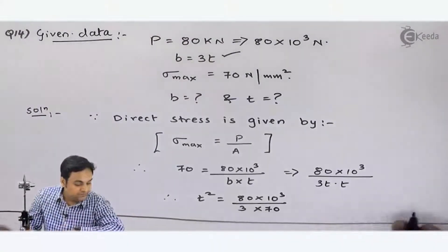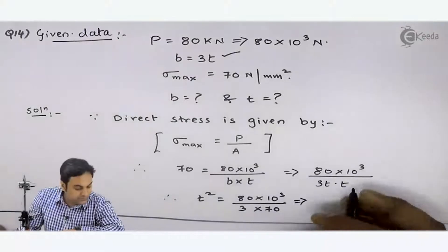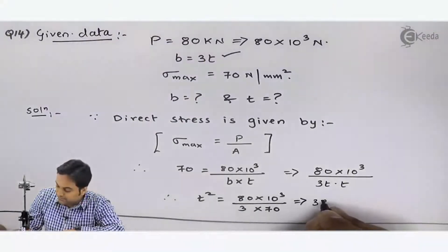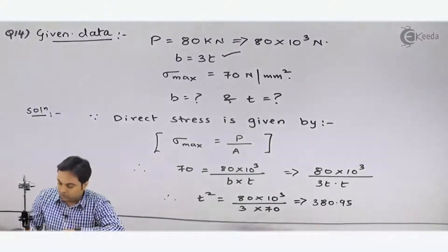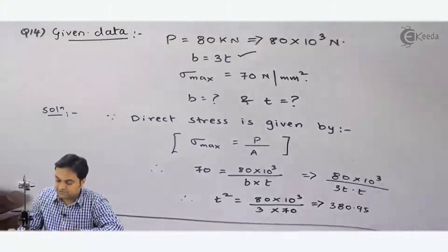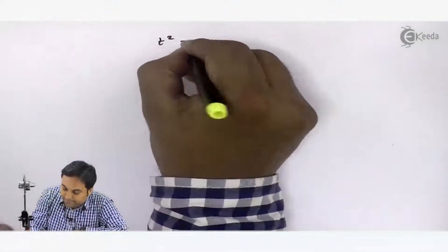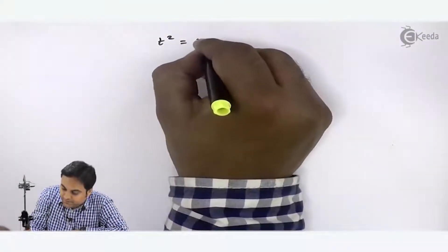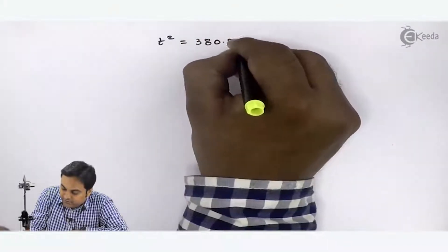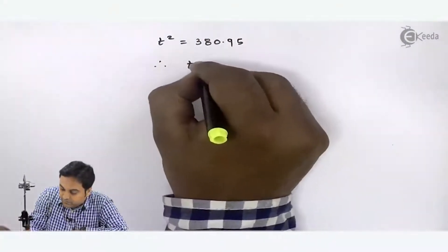I will get the answer: first of all, T square—T square I get is 380.95.